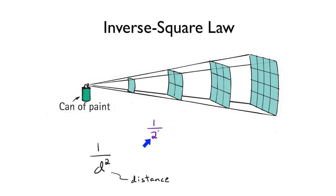Double the distance, and you have one-fourth as much. Triple the distance, and you have one-ninth as much. Quadruple the distance, and you have one-sixteenth as much, and so forth.